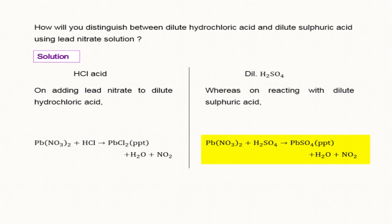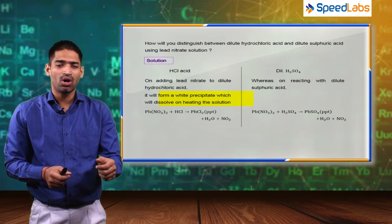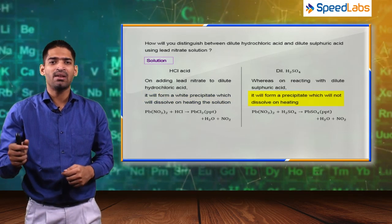Now, lead chloride (PbCl2) on heating gets dissolved, whereas lead sulfate (PbSO4) on heating does not dissolve.